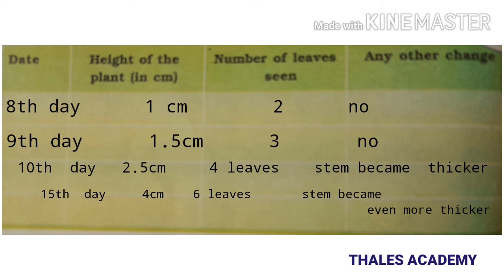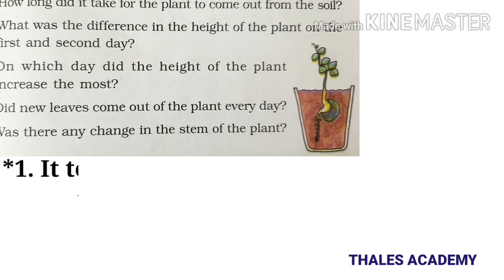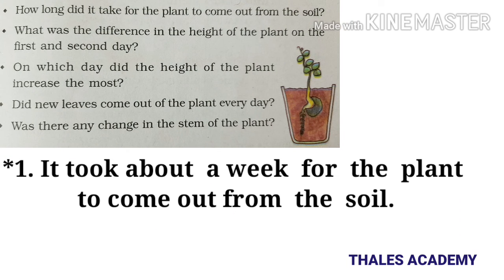The number of leaves increased to four. Any further changes? The stem became thicker. On the fifteenth day, the height of the plant is four centimeters, number of leaves is six, and the stem became even thicker. How long did it take for the plant to come out of the soil? It took about a week.